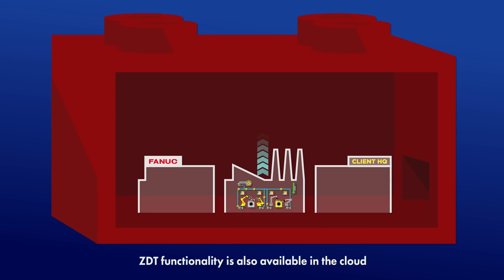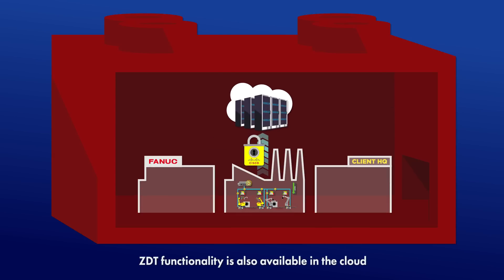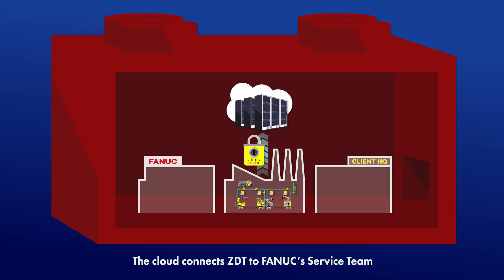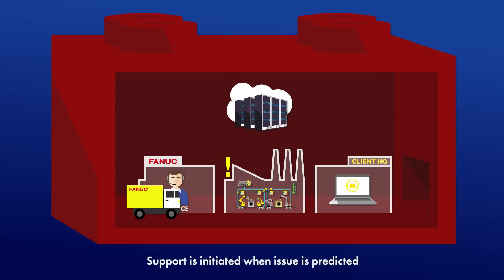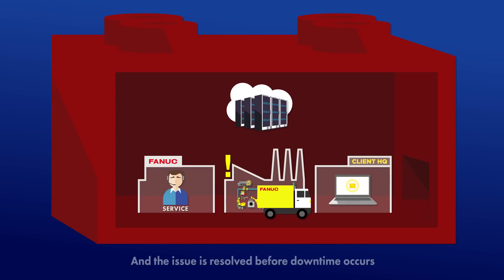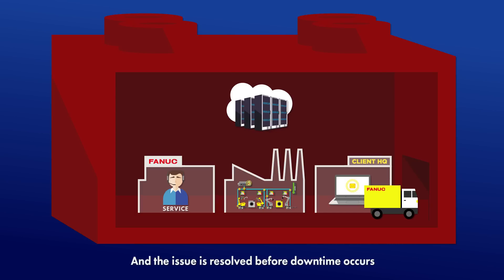Partnering with Cisco, FANUC has securely extended the functionality of ZDT to send data to the cloud. With cloud connectivity, when an issue is predicted, ZDT automatically notifies FANUC's service team to take action so parts and support can quickly be dispatched to the site and the issue can be resolved before unexpected downtime occurs.